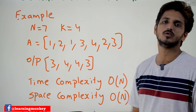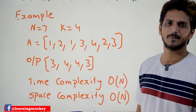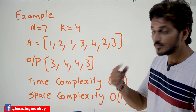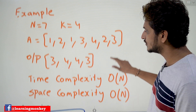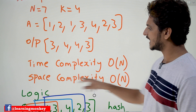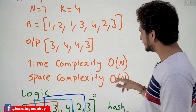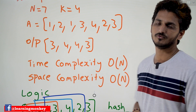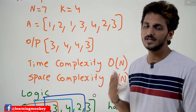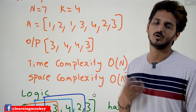This is the output you have to provide. The time complexity you have to maintain here is order of n and the space complexity is order of n. We need to maintain this time and space complexity.